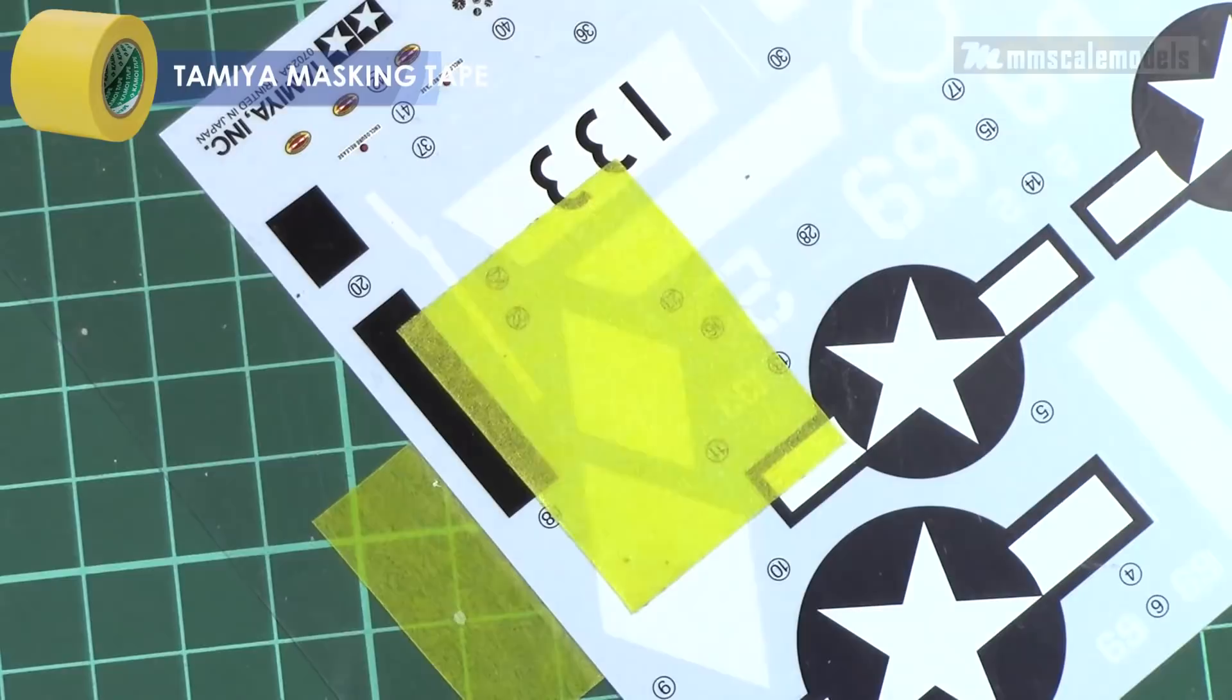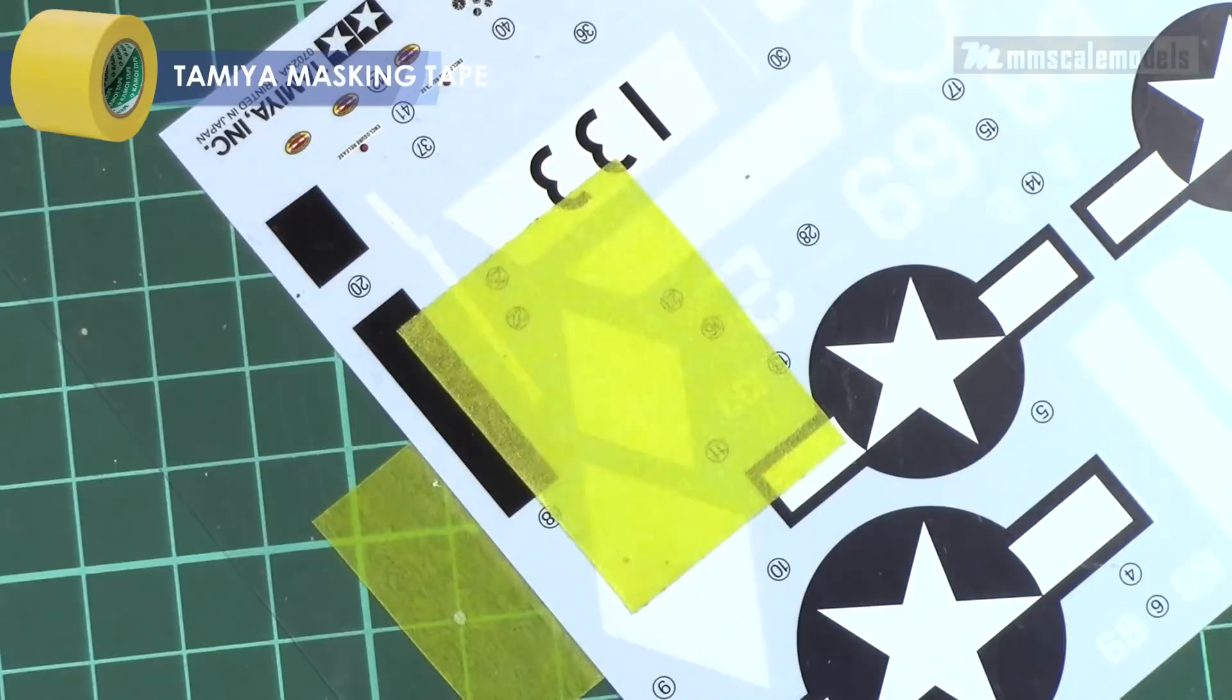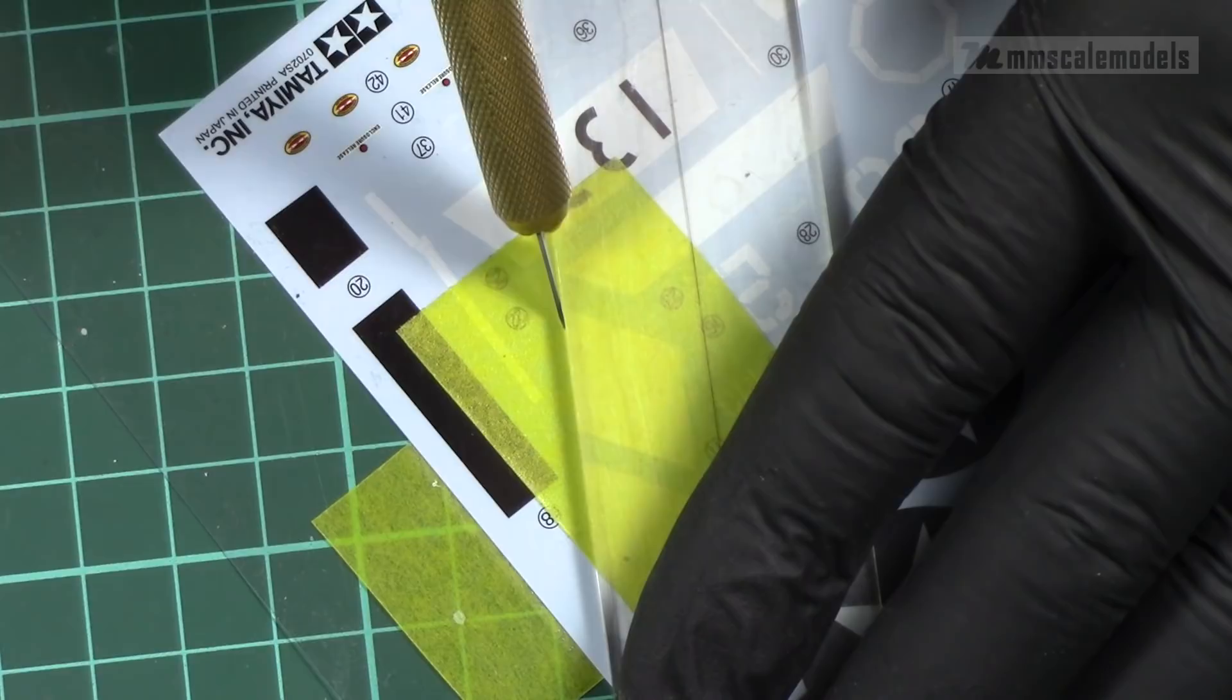Here a transparent ruler makes things a bit easier but a non-transparent one works well too. A fresh blade is a must if you asked me.